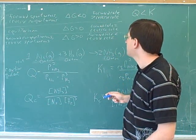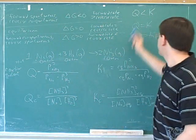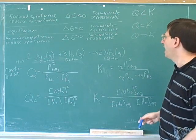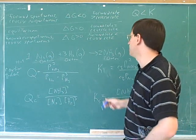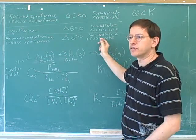If you're told that the forward reaction is spontaneous, that's a synonym for saying that Q is less than K. And if you're told that Q is greater than K, that's a synonym for saying that the forward rate is less than the reverse rate.